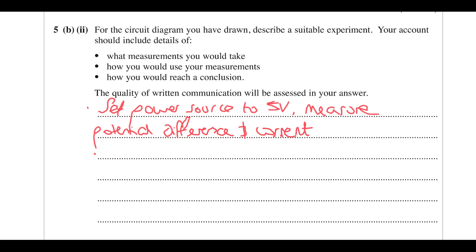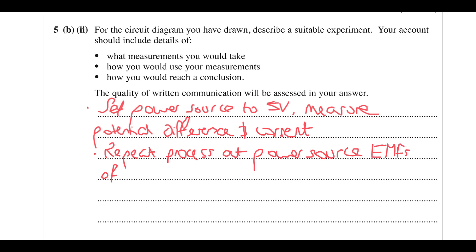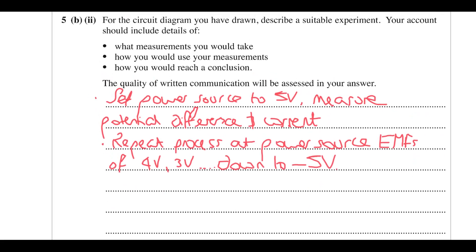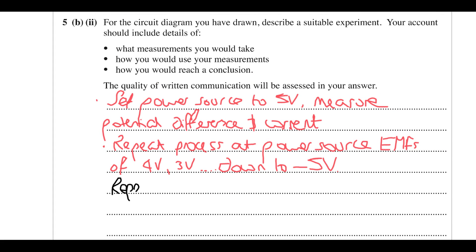Then change the power source — repeat the process for 4 volts, 3 volts, down to −5 volts, because we want to look at the opposite side. Going from 5 to −5 should give a nice range of results. Repeat the whole process to calculate average currents and potential differences.